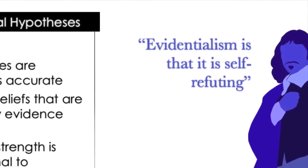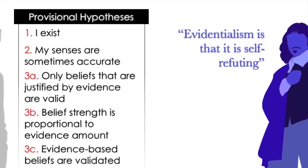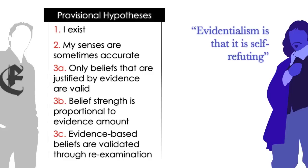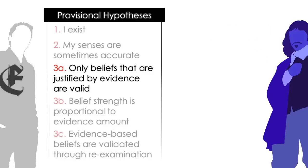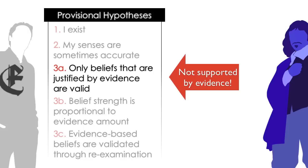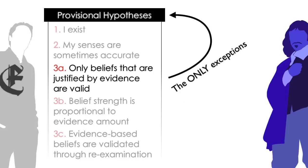Another very common objection to evidentialism is that it is self-refuting—namely, if I say only beliefs that are justified by evidence are valid, that claim itself is not supported by evidence. In my previous video, my implicit answer to this supposed refutation was that every belief except these five provisional assumptions or hypotheses needs to be justified by evidence.